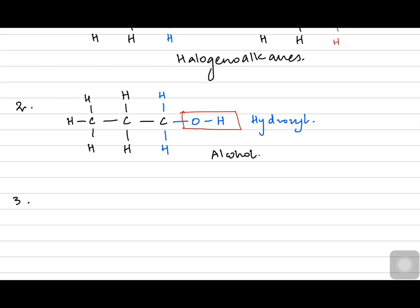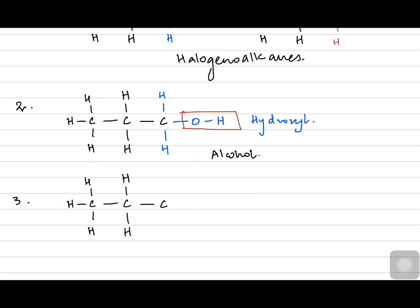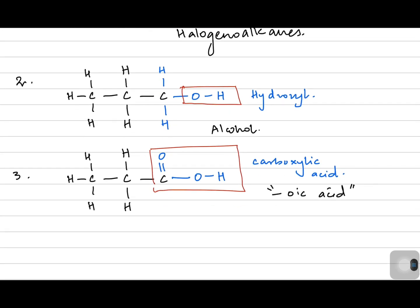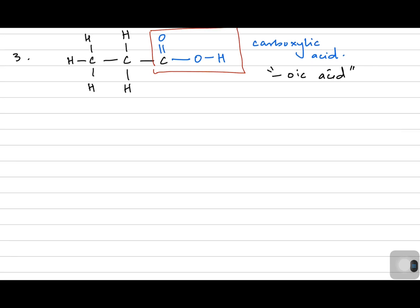A very unique functional group is carboxylic acid. Carboxylic acids have a larger functional group: a carbon double-bonded to oxygen on one side and an OH on the other side. Their names end with '-oic acid.' We will practice naming structures with halogens, alcohols, and carboxylic acids.